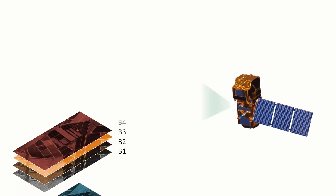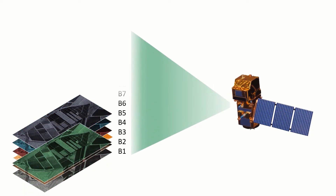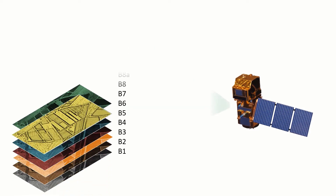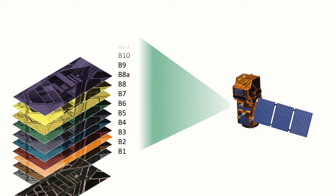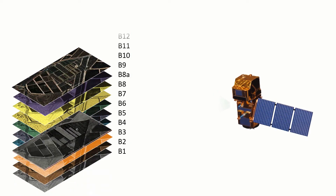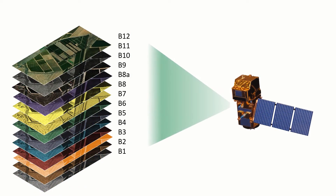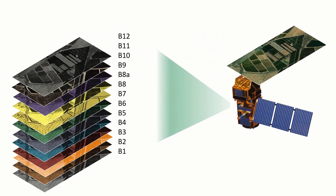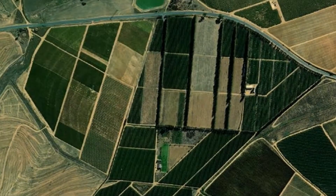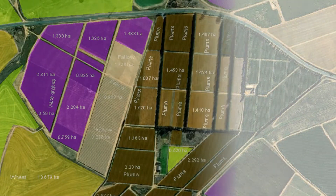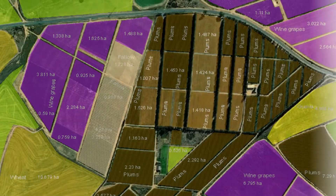Each layer represents a different band on the electromagnetic spectrum and ranges from 10 to 60 meters in pixel size. Combining these different bands allows us to see different features in an image. Multispectral images provide enough detail for agricultural and atmospheric studies.